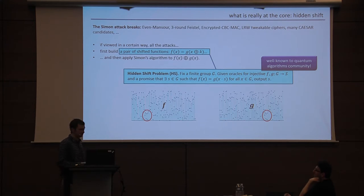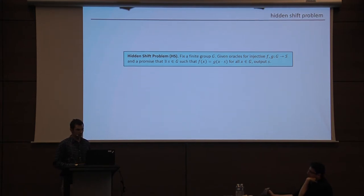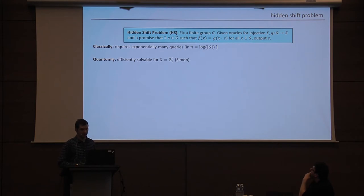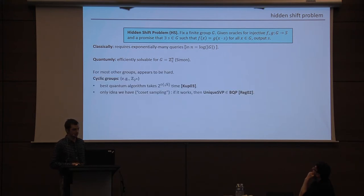So here's a couple of sort of random-looking functions. They're shifts, actually. So what do we know about this hidden shift problem after 20-some years of thinking about it? So we know that it requires exponentially many queries classically. And here the right complexity parameter is log the size of the group. And we know that it's efficiently solvable for Z mod 2 to the n by the algorithm that I just told you about, Simon. However, for most other groups, this problem appears to be hard.